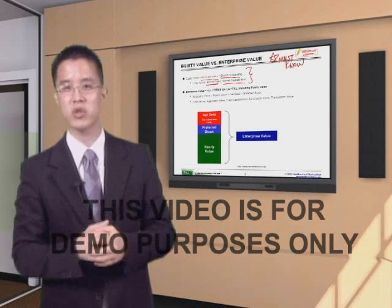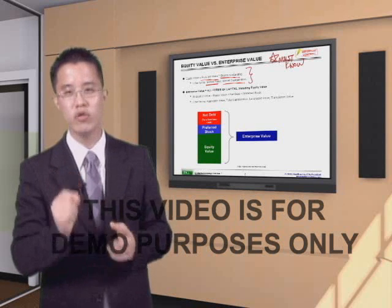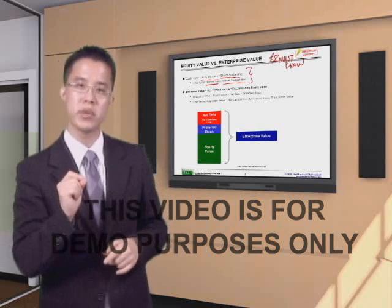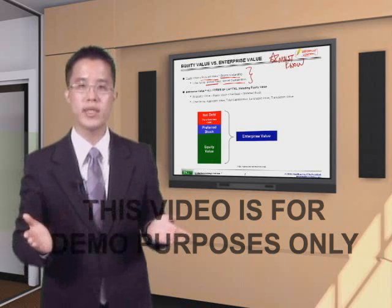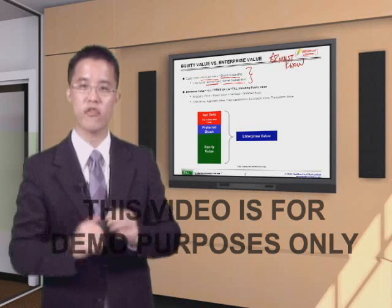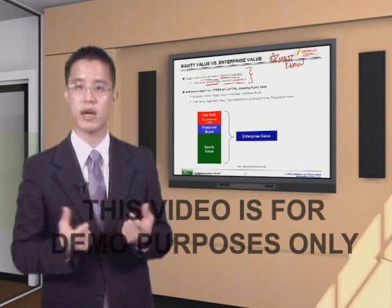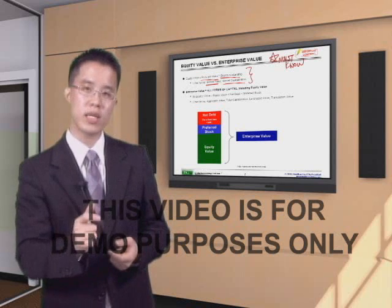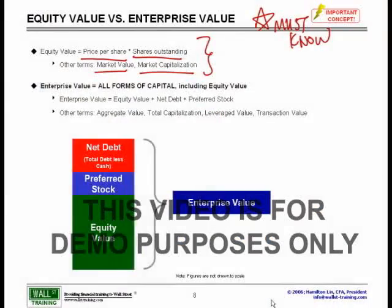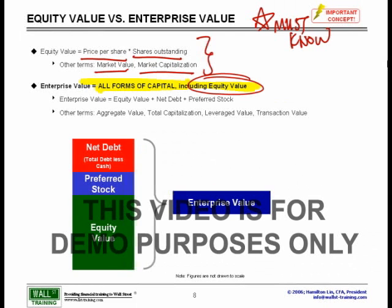Now I know what you're thinking — your seventh grade English teacher would say you can't use a word to define itself. But when you truly think about it, it actually makes a lot of sense. The enterprise is the entire operation, the entire firm, the entire company. So what we are trying to value is the value of this entire operation, the entire enterprise. Said more concretely, enterprise value equals all forms of capital, of which equity value is merely but one component.